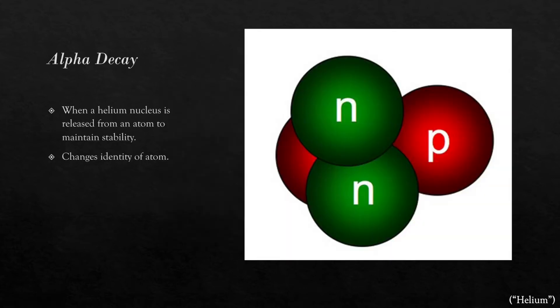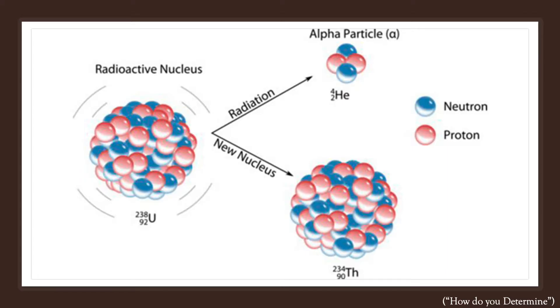Alpha decay, explained simply, is when an unstable nucleus loses a helium nucleus in order to become stable again. This means that the element loses two protons and two neutrons. Due to the inherent loss of protons, this form of decay also changes the identity of the atom. An example of alpha decay is the loss of a helium nucleus in uranium, that holds 92 protons, which then becomes thorium, an element with 90 protons.